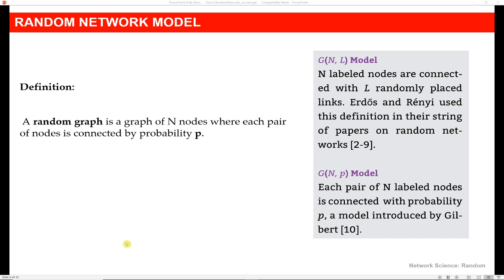So here's the formal definition: a random graph is a graph of n nodes where each pair is connected by probability p. And so you have these random links that get placed all over the graph. Consider a pair of nodes, and then check out p and figure out if there's going to be a connection or not based on that probability.